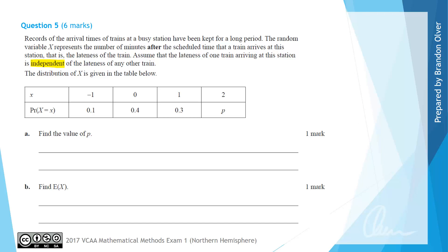For part A we're asked to find the value of P. So we know that the sum of all of the probabilities must add up to 1. Therefore we know that 0.1 plus 0.4 plus 0.3 plus P must equal 1. Therefore the value of P is 0.2 when we solve that equation.